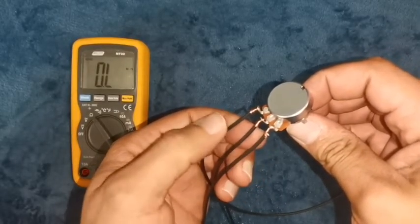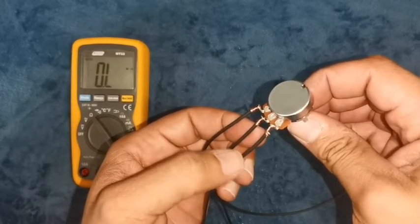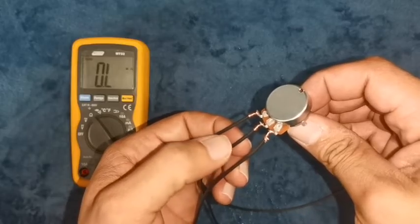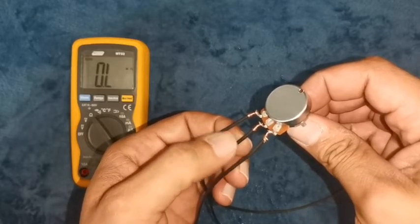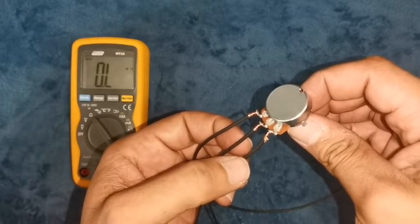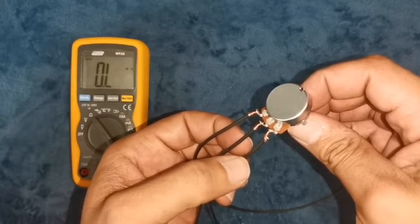The two on the sides are my end terminals, or that is what we call them, and then I have my center terminal. Now the way this should be connected is by connecting the center terminal and either one of these end terminals. Only then you will be able to vary the resistance.